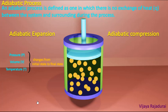So finally we conclude: in an adiabatic process, the pressure, volume, and temperature change from one state to another state — that is, from initial state to final state — and no heat transfer takes place. Therefore, in an adiabatic process, the q value is always zero.